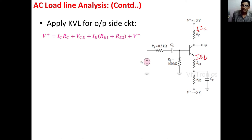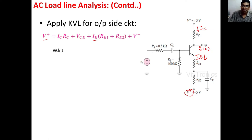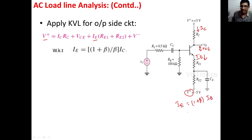Applying KVL: V+ = Ic·Rc + Vce + Ie·(Re1 + Re2) − V−. We know that the emitter current Ie = (1 + β)·Ib, and that Ic = β·Ib. From the collector current equation, Ib = Ic/β, so substituting: Ie = (1 + β)·(Ic/β).